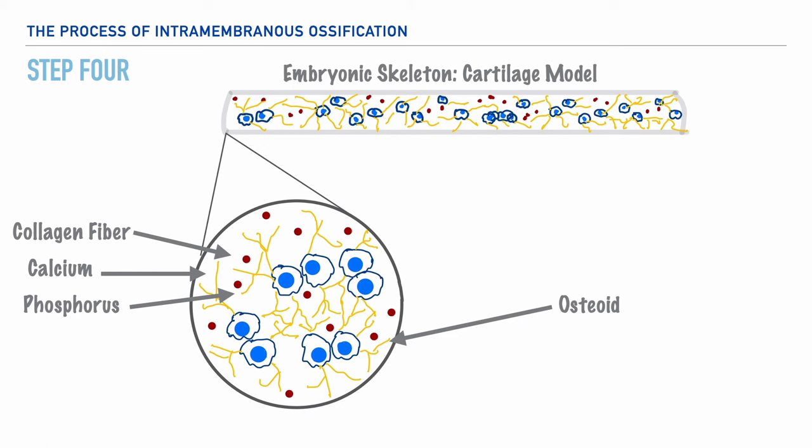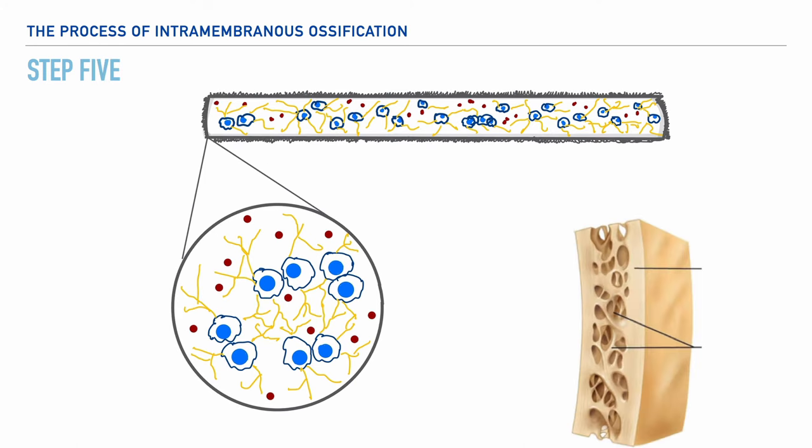Through this process, the osteoblasts become entrapped in the surrounding tissue. What's unique to this process is that in the areas where osteoid is secreted around the capillaries, it becomes what we call trabecular bone.